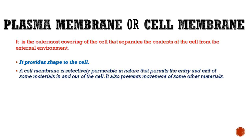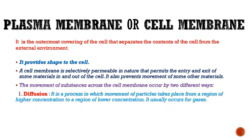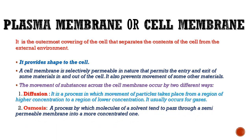The membrane also prevents movement of some other materials. The movement of substances across the cell membrane occurs by two different processes: diffusion and osmosis. Diffusion exclusively occurs for gases — it is a process in which movement of particles takes place from a region of higher concentration to a region of lower concentration.